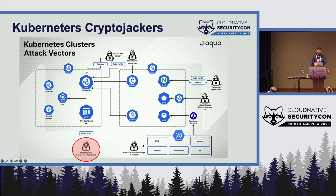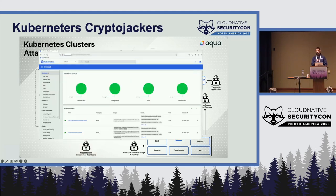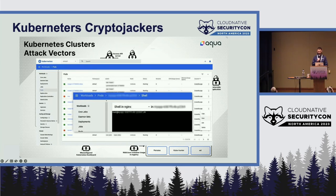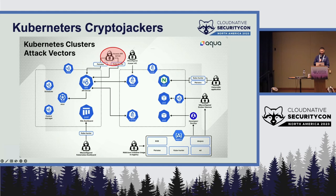The fourth attack vector is misconfiguration of the Kubernetes dashboard. The Kubernetes dashboard is an easy interface for your cluster — it lets you list running pods, list secrets, and even get a shell on containers, all from your browser. We've seen exposed Kubernetes dashboards in the wild, and this basically allows full control of your cluster.